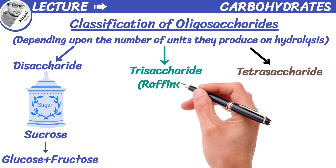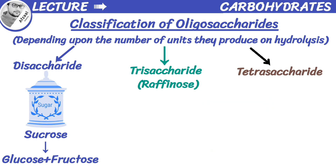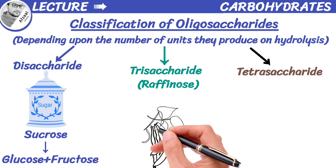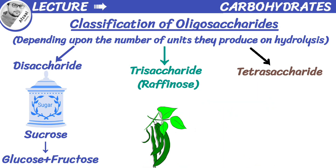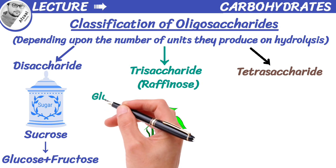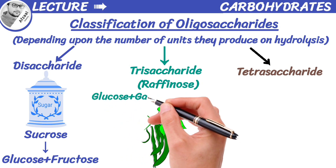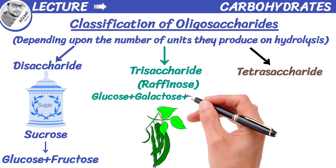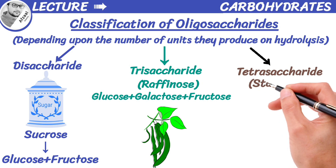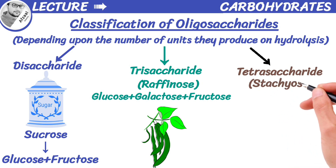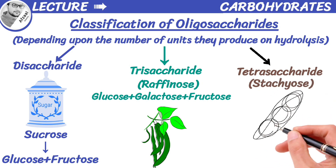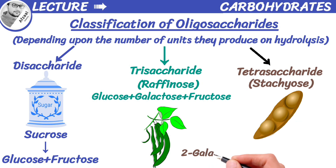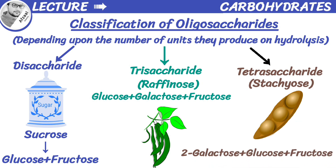An example of a trisaccharide is raffinose, which is found in beans and other legumes, and is made up of glucose, galactose, and fructose. Stachyose is a tetrasaccharide found in soybeans and other legumes, consisting of 2 galactose units, 1 glucose unit, and 1 fructose unit.